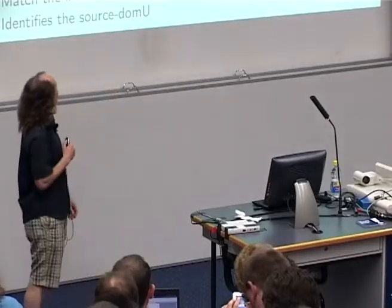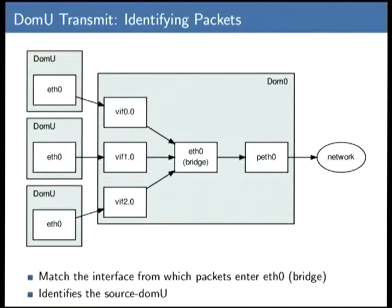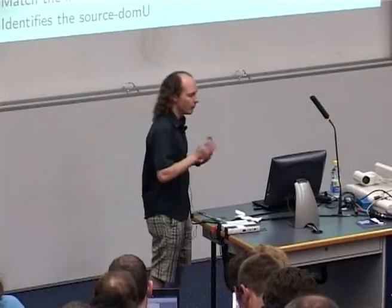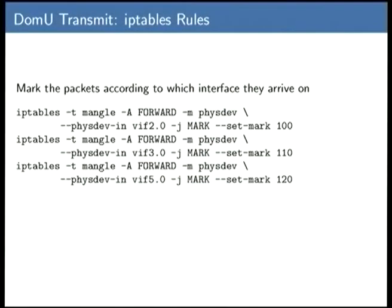Looking at packets coming out, we look at which interface the packet is coming from and stamp a mark on it accordingly. Here are some simple IP tables rules: for each of the three virtual interfaces — vif 2.0, 3.0, 5.0 — we give each an individual mark: 100, 110, 120. The number itself doesn't matter, it just needs to be unique between the three. You could give two interfaces the same mark to group them. It's important to use these numbers consistently later.